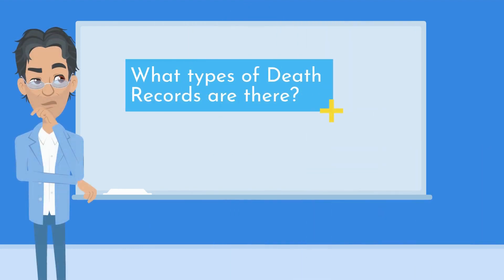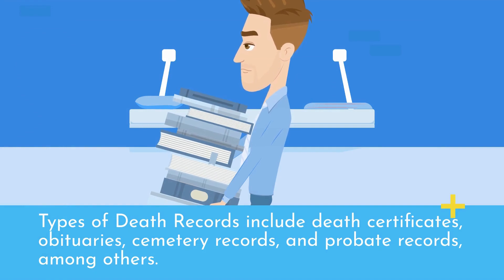What types of death records are there? Types of death records include death certificates, obituaries, cemetery records, and probate records, among others.